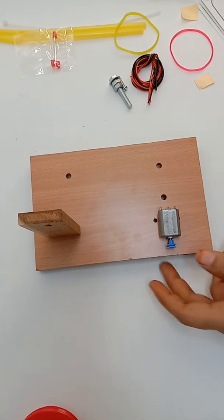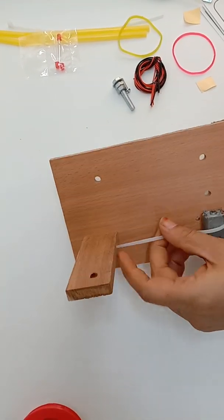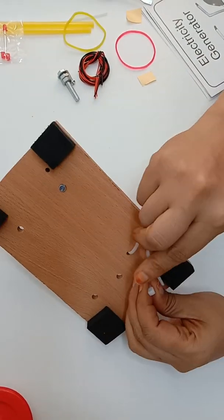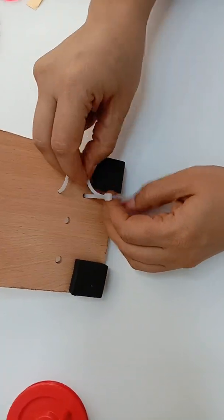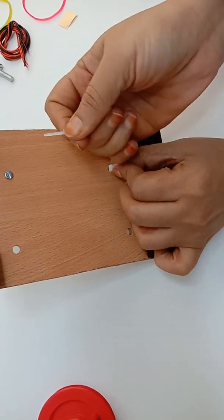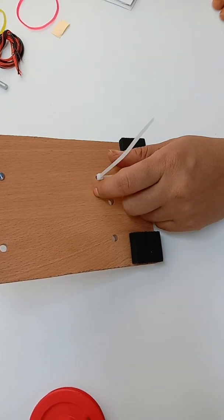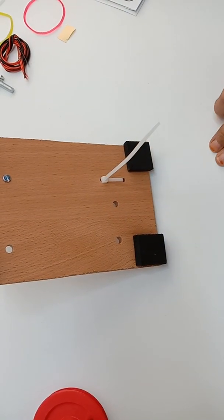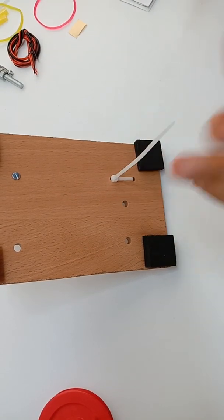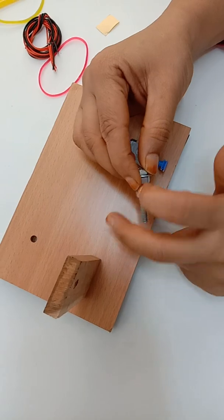Now to give extra support to the motor, we are going to place a cable tie around the motor which will keep the motor in its place. You can cut this extra cable tie.